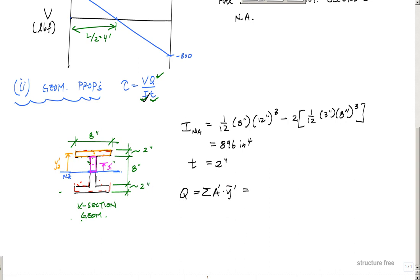Really, I have two areas so I'm going to have two things I'm going to sum up. This would be for the first area, which I'll call one, and this one will be my two. So here I would have A1 y1 bar prime plus A2 y2 prime, where y prime is the distance to the center of that area from the neutral axis.